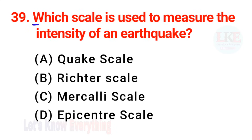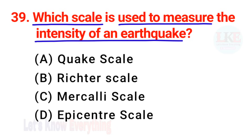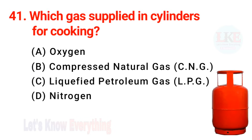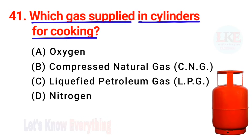Question number 39: which scale is used to measure the intensity of an earthquake? Right answer option B — Richter scale. Question number 40: the source of an earthquake is measured by a seismograph. Question number 41: which gas is supplied in cylinders for cooking? Right answer option C — liquefied petroleum gas, LPG.